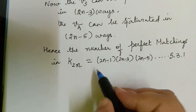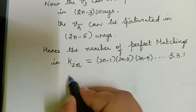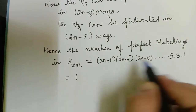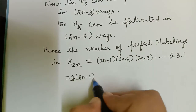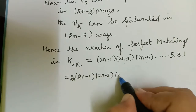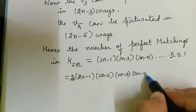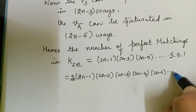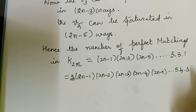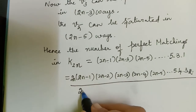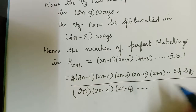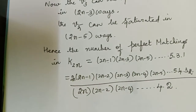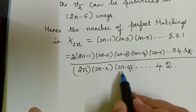To simplify, we multiply by the even numbers as well, writing out: 2n × (2n−1) × (2n−2) × (2n−3) × (2n−4) × (2n−5) × ··· × 5 × 4 × 3 × 2 × 1. Since we introduced extra even numbers — 2n, 2n−2, 2n−4, ..., 4, 2 — we must divide by them, giving us the denominator 2n × (2n−2) × (2n−4) × ··· × 4 × 2.